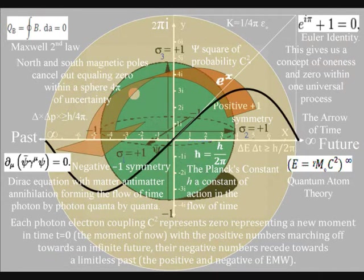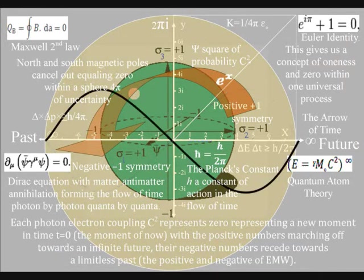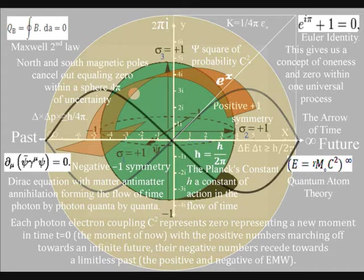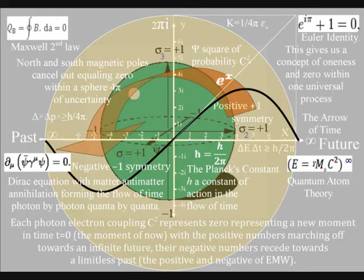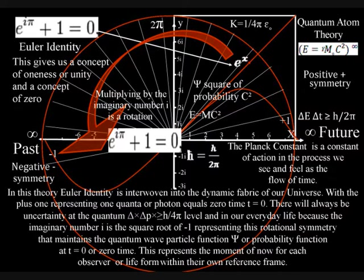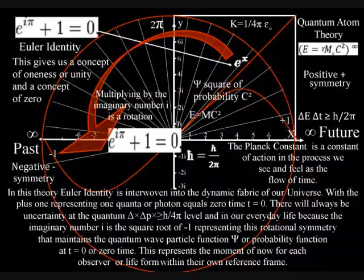In the top right-hand corner of this diagram we have Euler's identity — the most beautiful equation to come out of the mind of man. But this beautiful equation has no meaning or purpose in modern physics. In this theory, however, Euler's identity is interwoven into the dynamic fabric of our universe, with the plus one representing one quantum or photon equals zero time — t equals zero, the moment of now.